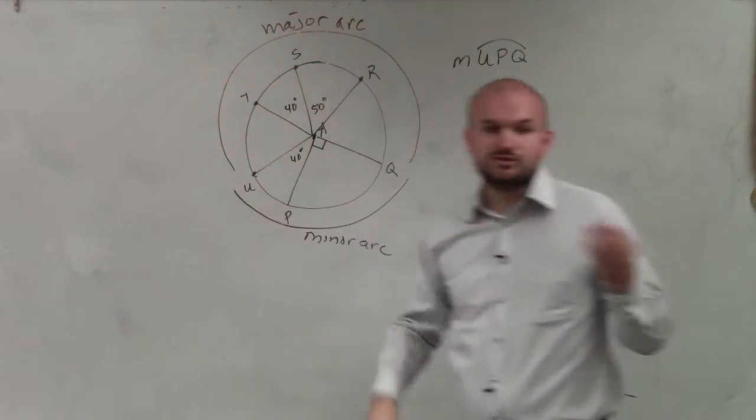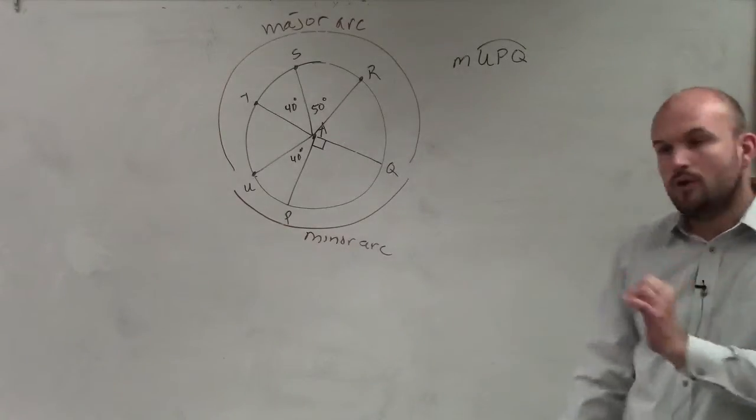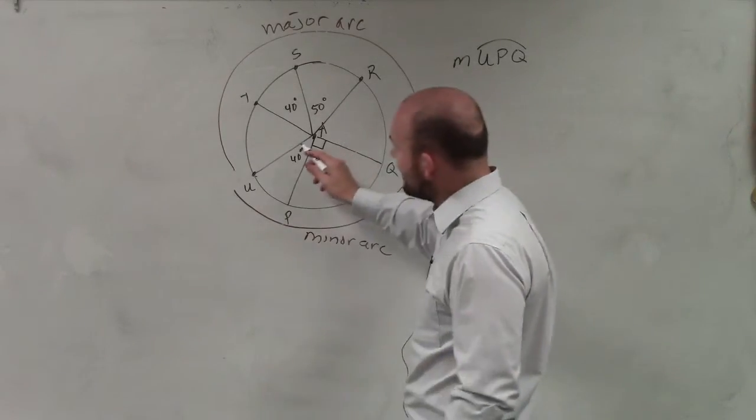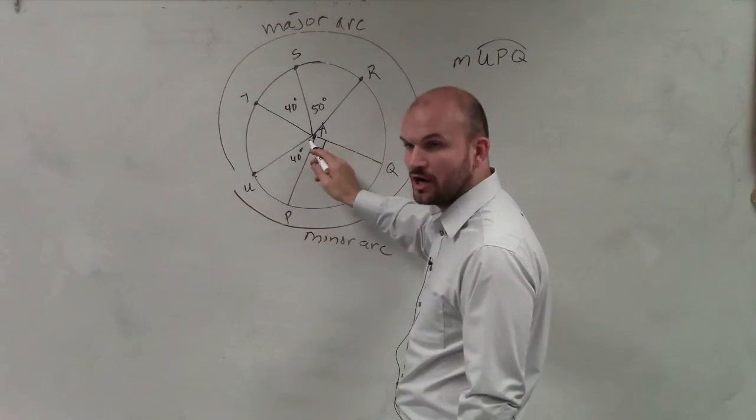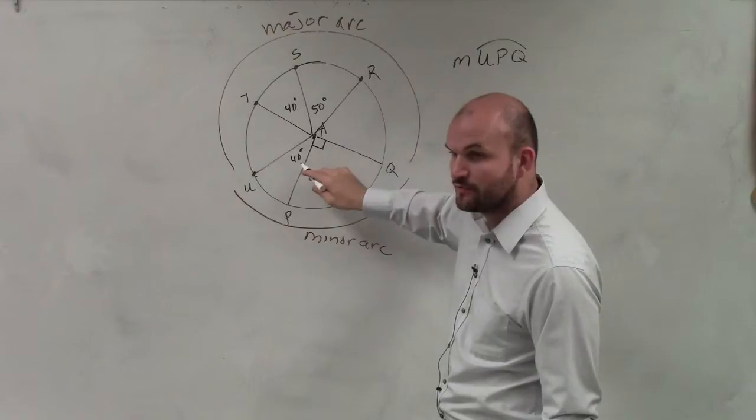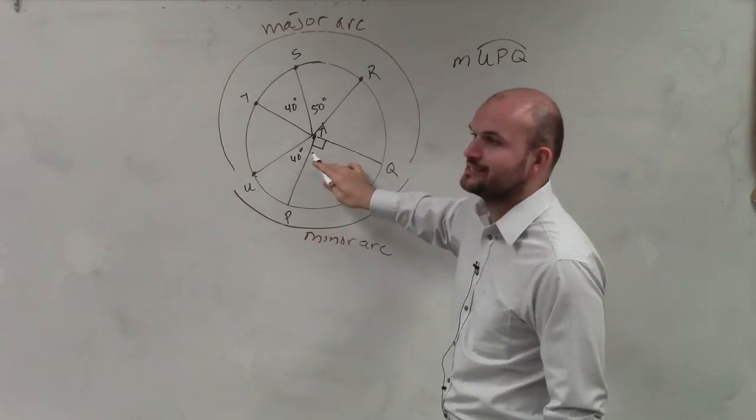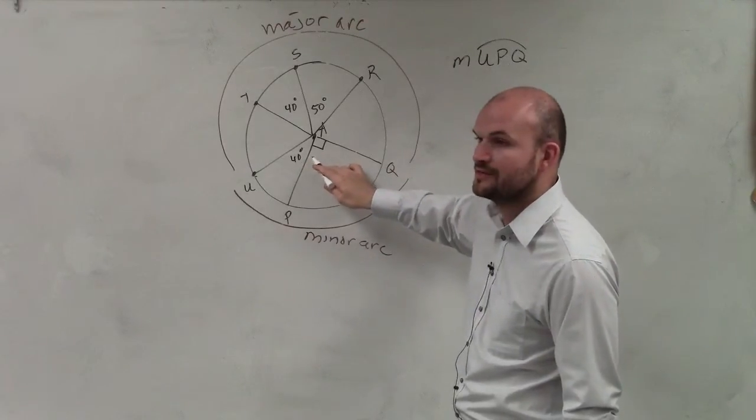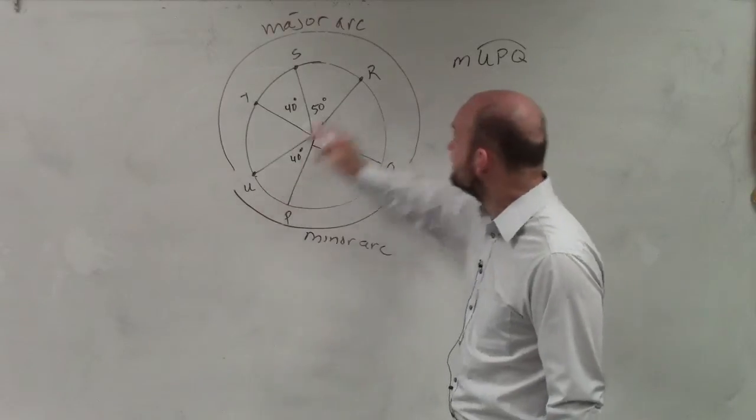Now, when trying to find the minor arc, all we simply need to do is find the angle at the vertex. So right now, we know that the angle between here and here is 40 degrees. And this has this nice little square box, which tells us the angle is 90.